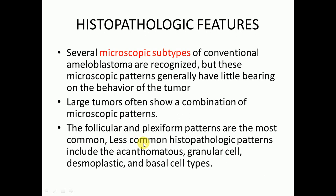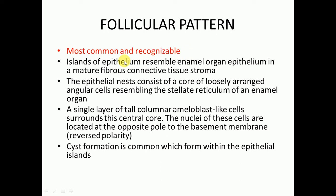The follicular pattern is the most common and recognizable. There will be islands of epithelium resembling the enamel organ in a mature fibrous connective tissue stroma. The epithelial nests consist of a core of loosely arranged angular cells resembling the stellate reticulum of an enamel organ. A single layer of tall columnar ameloblast-like cells surrounds this central core. The nuclei of these cells are located at the opposite pole to the basement membrane, showing reverse polarity. Cyst formation is common and occurs within the epithelial islands.